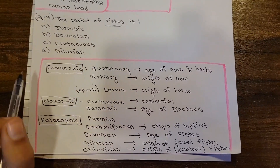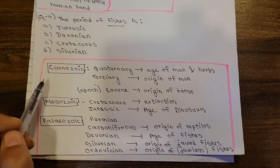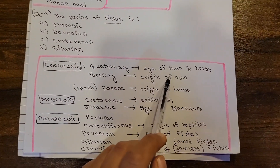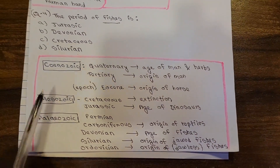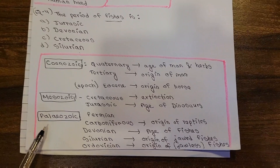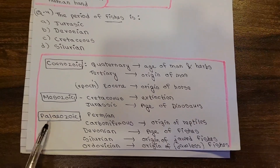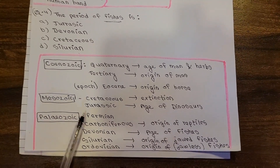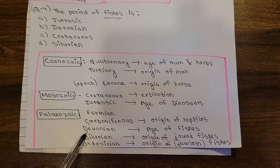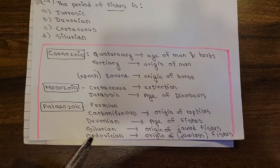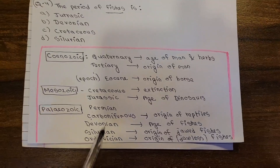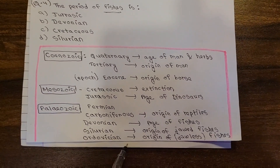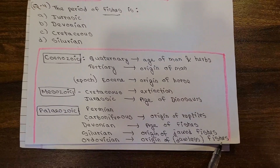In different eras, there are different periods and specific events to remember. In the Paleozoic era, the periods include Permian, Carboniferous, Devonian, Silurian, and Ordovician. The period of fishes falls within this era. We need to remember which period is associated with which major biological event — this is key for the exam.